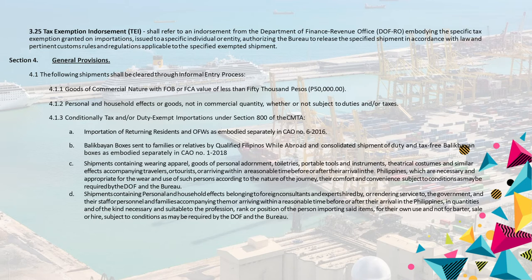Section 4. General Provisions. 4.1 The following shipments shall be cleared through informal entry process: 4.1.1 Goods of commercial nature with FOB or FCA value of less than 50,000 pesos. 4.1.2 Personal and household effects or goods, not in commercial quantity, whether or not subject to duties and/or taxes. 4.1.3 Conditionally tax and/or duty exempt importations under Section 800 of the CMTA.